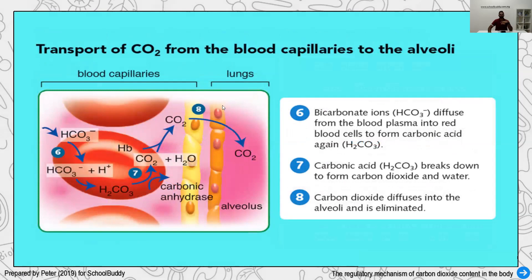Once in bicarbonate form, it fuses with hydrogen again to form carbonic acid, and then with the enzyme carbonic anhydrase it forms carbon dioxide. So to pass through the blood capillaries, CO2 needs to be converted into simpler molecules, and only when it reaches near the lung area can it diffuse into the alveolus. It's not as simple as just breathing in and out — these complex processes are what enable material exchange.